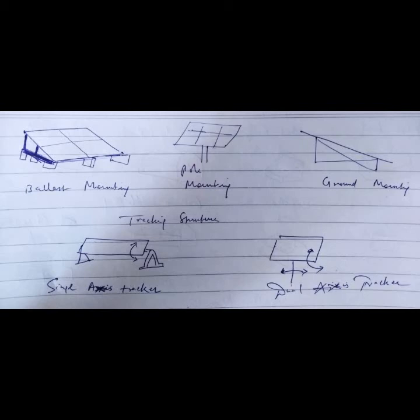There are tracking structures. Single tracking means up and down it will track. Dual axis tracking rotates from east to west and also up and down, left and right.